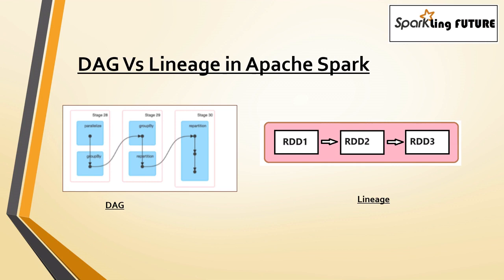Whenever there is a wide transformation, a new stage will be created. With that, we will come to know how many wide transformations we have. And also, under the SQL tab, if you see that DAG, it will show how many records we are processing, what is the size of the data — all those details we can see in the DAG. So that means it is the optimized execution plan for data processing tasks in Spark.